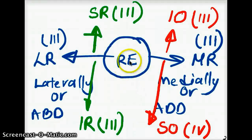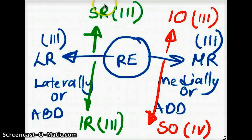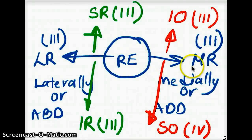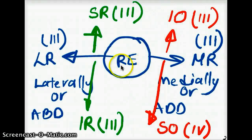To summarize the elevation and depression: if your eye can abduct and then elevate, we're talking about superior rectus. If your eye can abduct and depress, we're talking about inferior rectus. If your eye can adduct and elevate, we're talking about inferior oblique. If your eye can adduct and depress, we're talking about superior oblique.